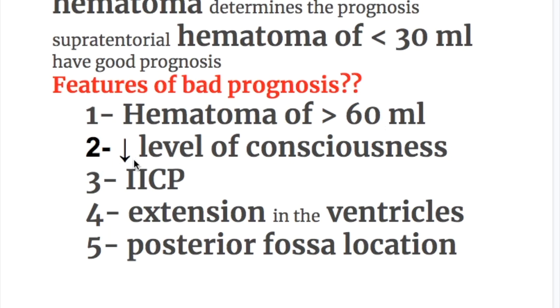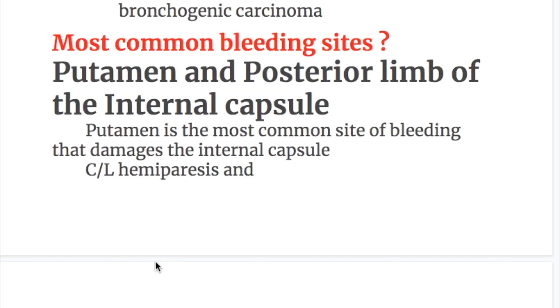Further features of bad prognosis are: number two, decreased level of consciousness; number three, increased intracranial pressure; number four, extension into the ventricles; and number five, posterior fossa location.